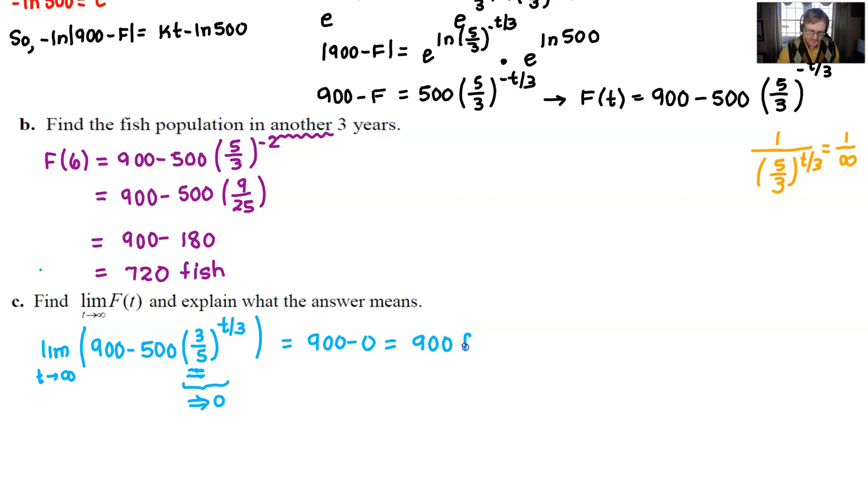Now, we talked about what that means. As time grows on forever, we're never going to exceed 900 fish. So that would simply be the maximum number of fish that would inhabit the lake.